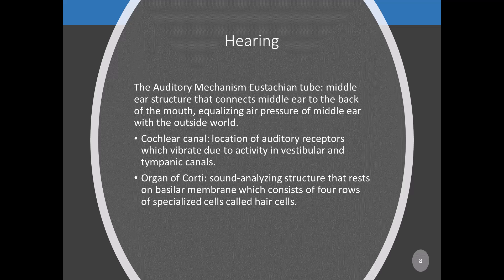The stirrup rests on the oval window. The vestibular canal is the point of entry of sound energy into the cochlea and connects with the tympanic canal at the far end of the cochlea through an opening called the helicotrema. The helicotrema allows pressure waves to travel through the cochlear fluid into the tympanic canal. At the end of the tympanic canal, the round window flexes outward with each sound wave, allowing the fluid to move.